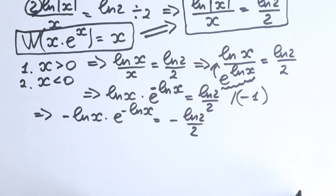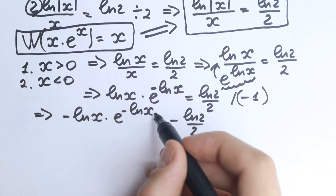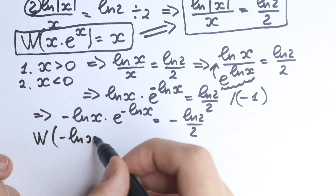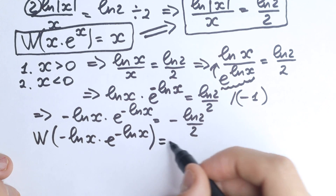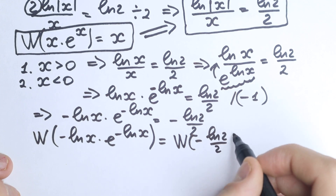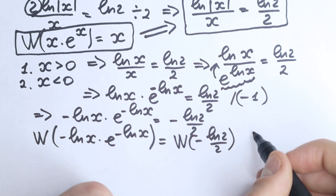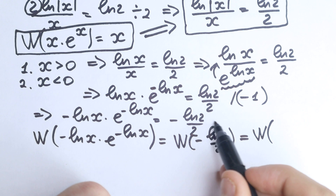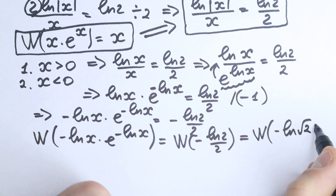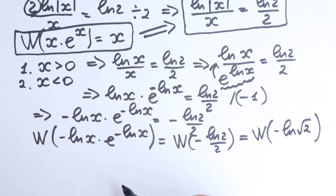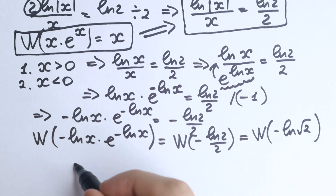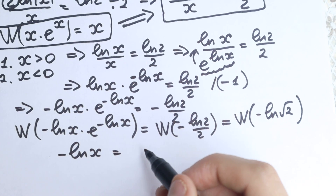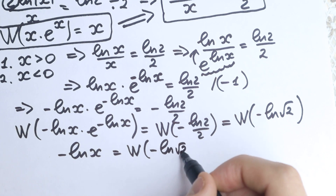Applying the Lambert W function to both sides: the left side simplifies to minus natural log x. On the right, we have W of minus natural log 2 over 2. We can rewrite this as W of minus natural log of the square root of 2, since the one-half brings down as a power of 2. So we have minus natural log x equals W of minus natural log square root of 2.